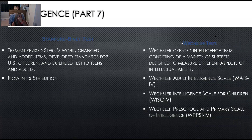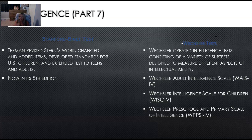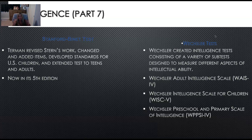Looking at the Stanford-Binet test: Terman revised Stern's work, changed and added items, developed standards for U.S. children, and extended the test to teens and adults. It's now in its fifth edition. Right now, a lot of people will use the Wexler test, and there are many different subtests within the Wexler, all different types. If you decide to go for your higher degree, you could take a class in this and you're going to learn all different kinds of testing devices.